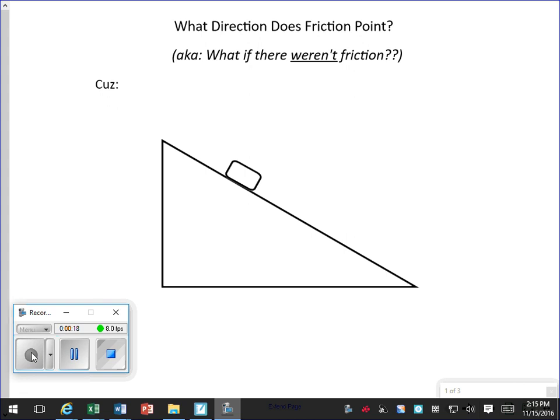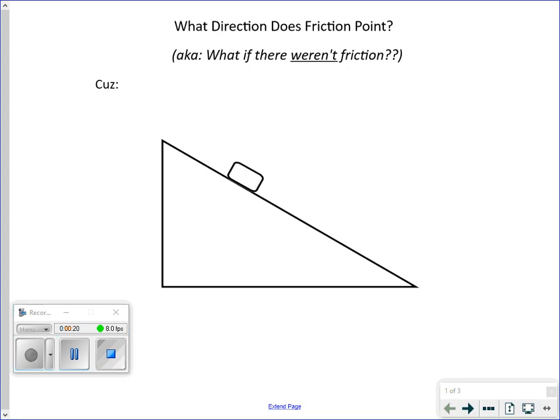Well, if there weren't friction, this object, as you know, would accelerate that way. That allows us to say, why doesn't it accelerate that way? Because of a frictional force that opposes that acceleration.